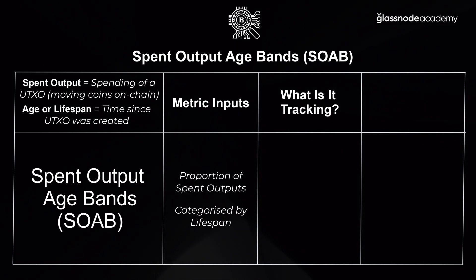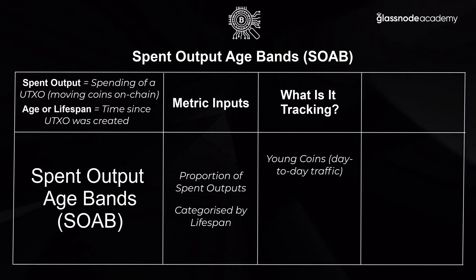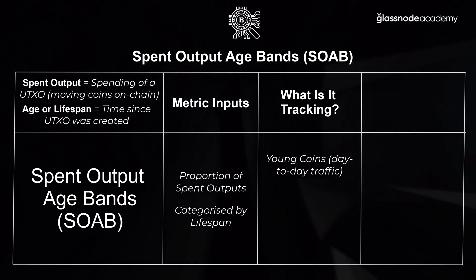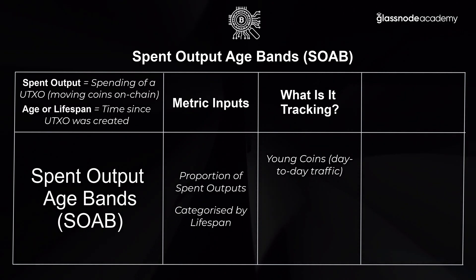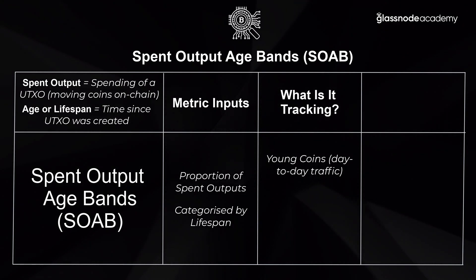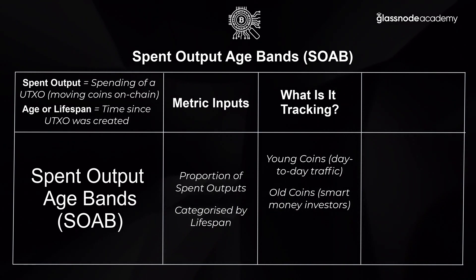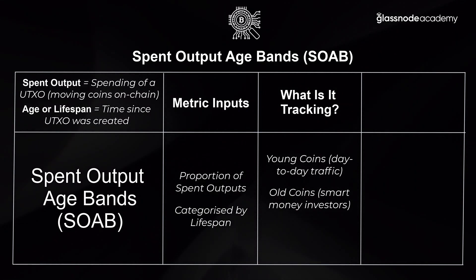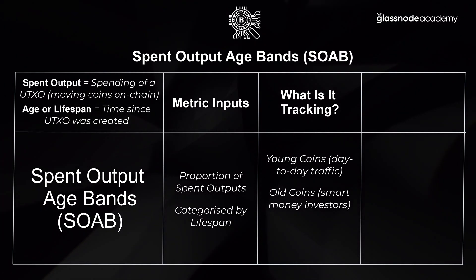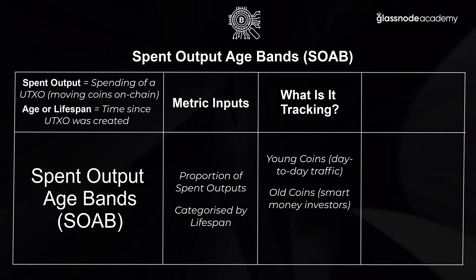When a large proportion of spending is young coins, it generally describes more day-to-day traffic — the same liquid supply essentially changing hands, moving between different exchanges and holders. When, on the other hand, we start to see a lot of older coins come back to life, it tells us more about investors from a previous market cycle: their general sentiment, whether they're bringing coins out of cold storage back into liquid circulation, or whether there's a change in long-term investor or smart money sentiment.